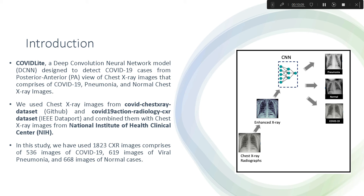As you know, there are different types of papers published in this field. In this use case, we have published our paper called COVID-Light, in which we used a deep convolutional neural network. Specifically, we used depth-wise separable convolutional neural networks to detect COVID-19, pneumonia, and normal cases. This project is inspired by the COVID-Light research paper.